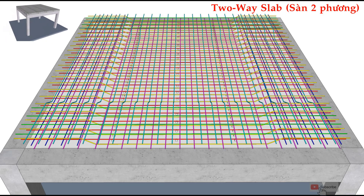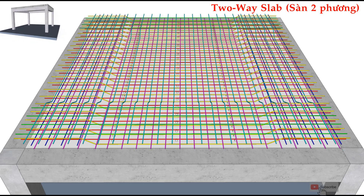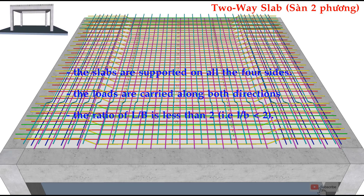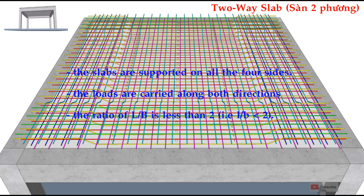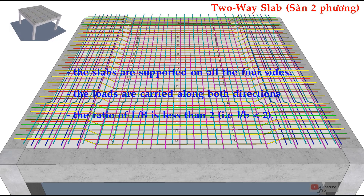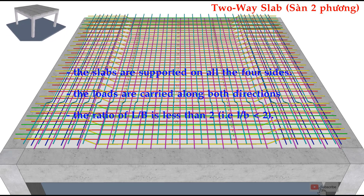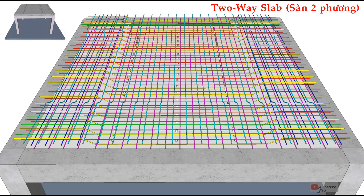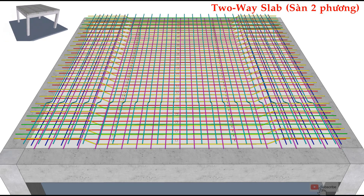In two-way slab, a two-way slab is a slab which is supported by beams or brick wall on all four sides, and the loads are carried by the support along both directions. It is known as two-way slab. In two-way slab, the ratio of the longer span to shorter span is less than two, and the main reinforcement spans in both directions.